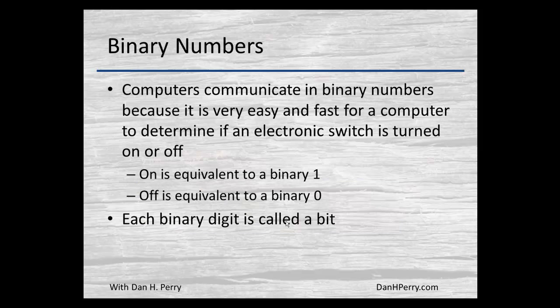Why do we use binary numbers? Computers use and communicate in binary numbers. It's very fast and easy for a computer to determine whether a switch is turned on or off. When an electronic switch is turned on, that is a binary one. When a switch is turned off, that's a binary zero. Those combinations of ones and zeros make up our binary numbers. Each binary digit, or each of those switches, is called a bit.